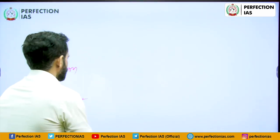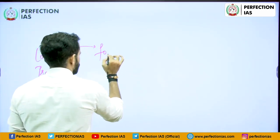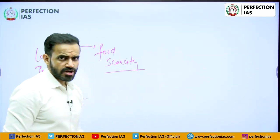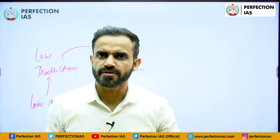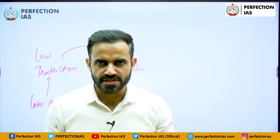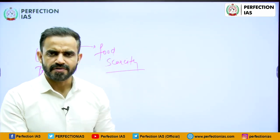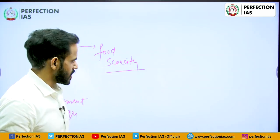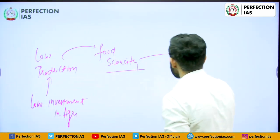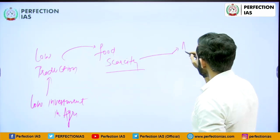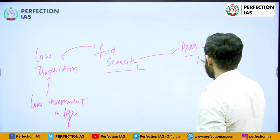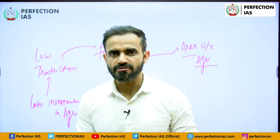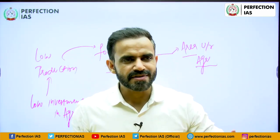Because of low production, food scarcity was there — it was not sufficient to fulfill the need of the entire population. Food security, on the other hand, refers to having a surplus amount of food to address the needs of the current population. After independence, the Government of India focused on increasing the area under agriculture so that overall production could increase.